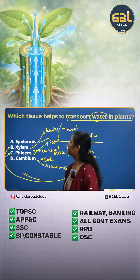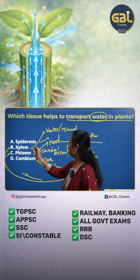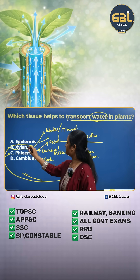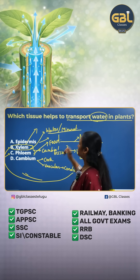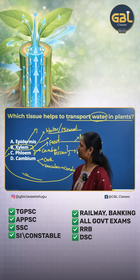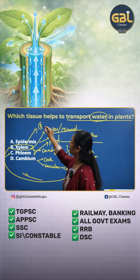According to the explanation, the correct answer for this question is xylem, which helps in transport of water and minerals. So option B is the correct answer.